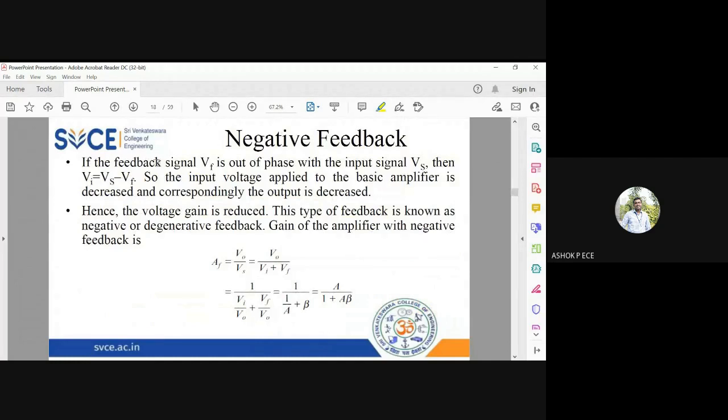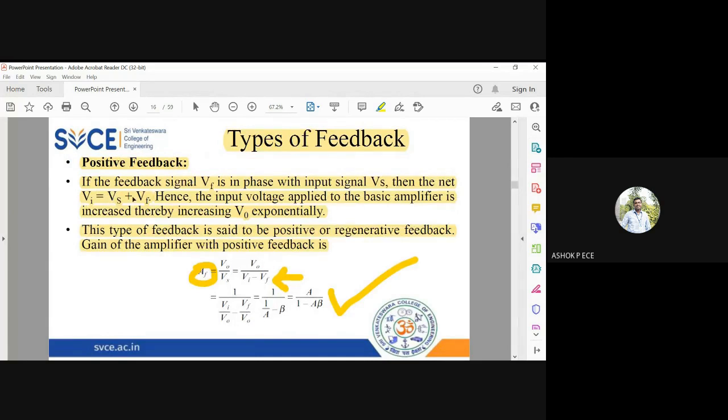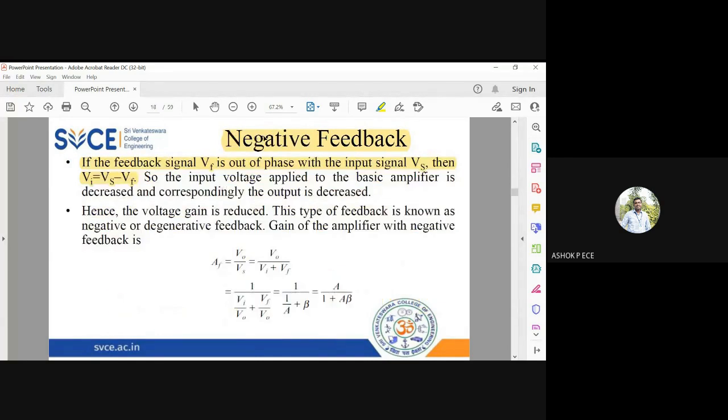In negative feedback, unlike positive feedback where the mixing circuit adds the signals, the signals are out of phase. So the mixer circuit will subtract the signals: VI equals VS minus VF. In positive feedback, VI equals VS plus VF. The negative indicates that the mixer circuit will perform subtraction. It will subtract the voltage coming from the signal source and the voltage coming from the feedback.